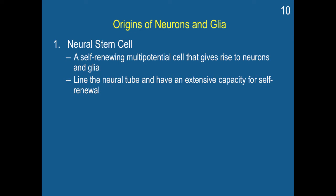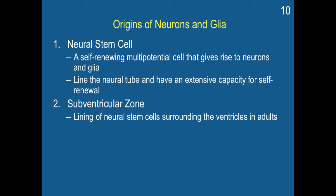It lines the neural tube and has an extensive capacity for self-renewal. Neural stem cells are particularly important for the brain. The subventricular zone is this lining of neural stem cells surrounding the ventricles in adults. So even in our adult brain, there are still some neural stem cells in the subventricular zones of the brain.